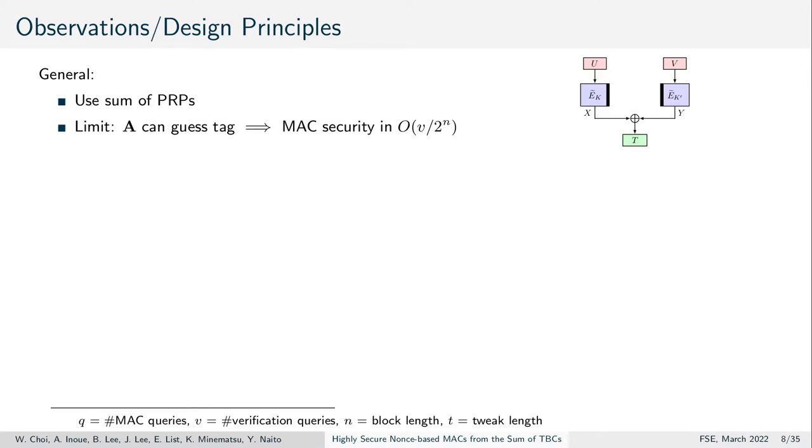We identify a few design principles that helped us on our way to achieve our goal. In general, n-bit tags limit the security of MACs to n bits since the adversary can always simply guess the tag. Moreover, the sum of independent permutations is well known for providing up to n bits, so this construction would help us on our way.